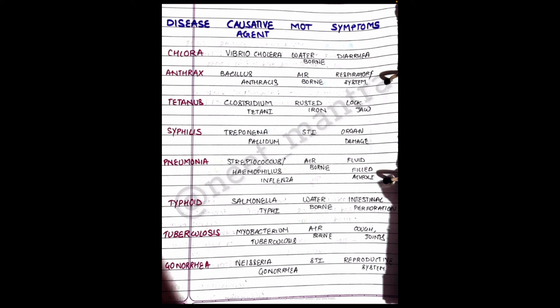Next we have Gonorrhea. It is caused by Neisseria gonorrhoeae. It is also a sexually transmitted infection and it affects our reproductive system.